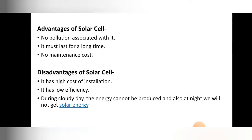Next we are going to see the advantages and disadvantages of the solar cell. The advantages are: first, no pollution associated with it — converting light energy into electrical energy causes no pollution compared to other sources. Second, the solar cell lasts for a long time — once you install solar plates, they work for longer periods. Third, lower maintenance cost.